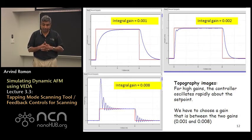So if one wants to improve the measured topography one might be tempted to increase the integral gain. And if the integral gain is increased to .002 you do find indeed that as soon as you hit the feature the amplitude responds very fast.